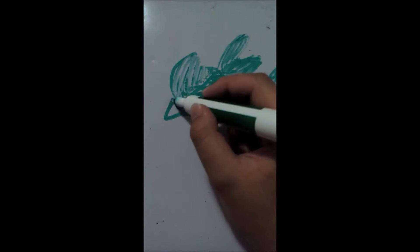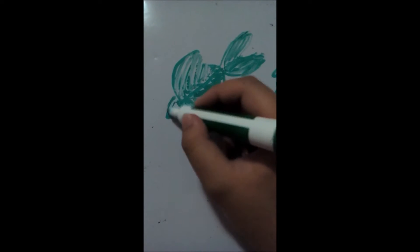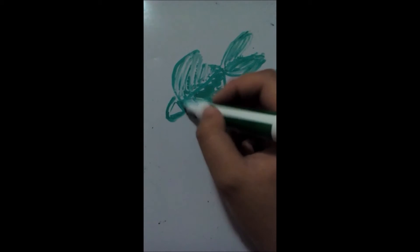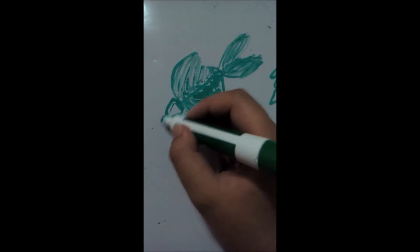Now you turn the arrow head into that of a bird's head and add a beak.